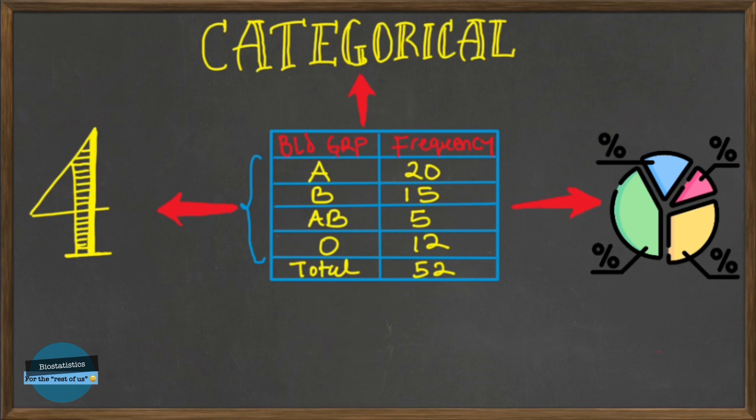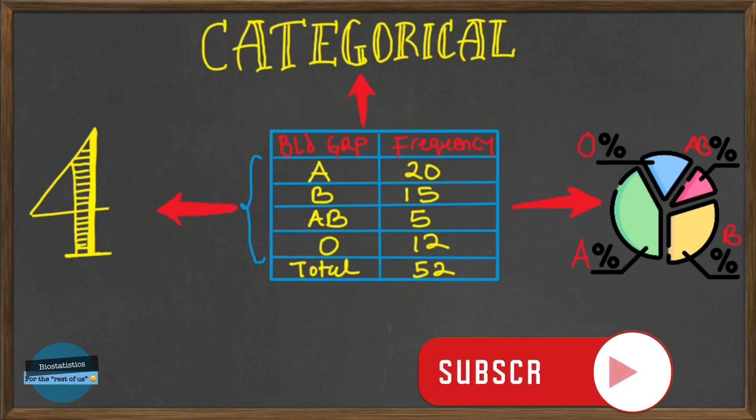And each category will be represented by a sector or a slice of the pie. Now, the question here is how do we draw this pie chart?